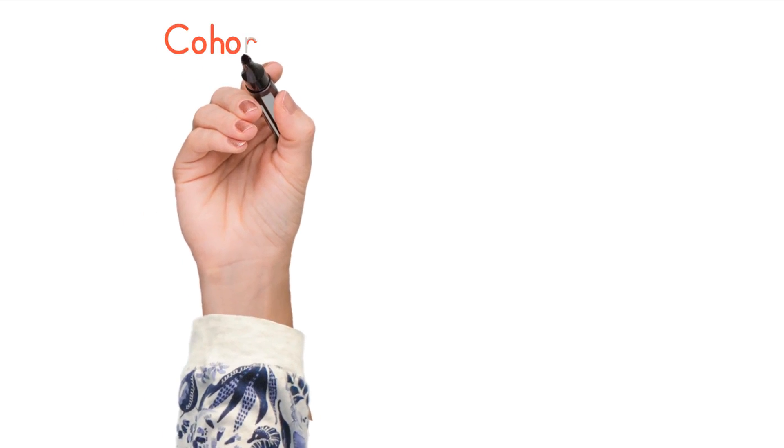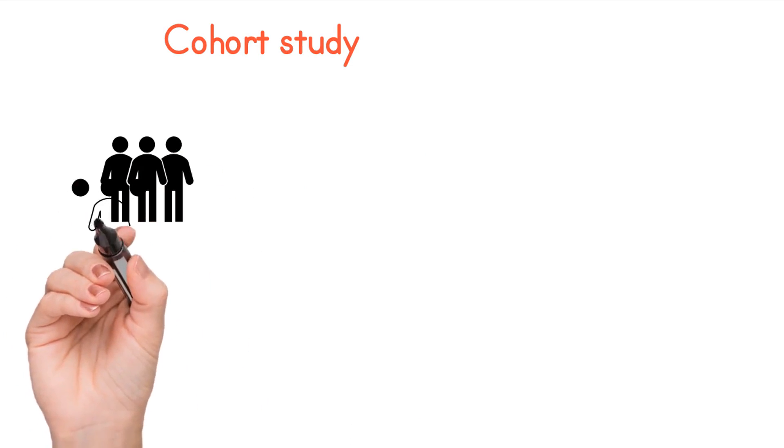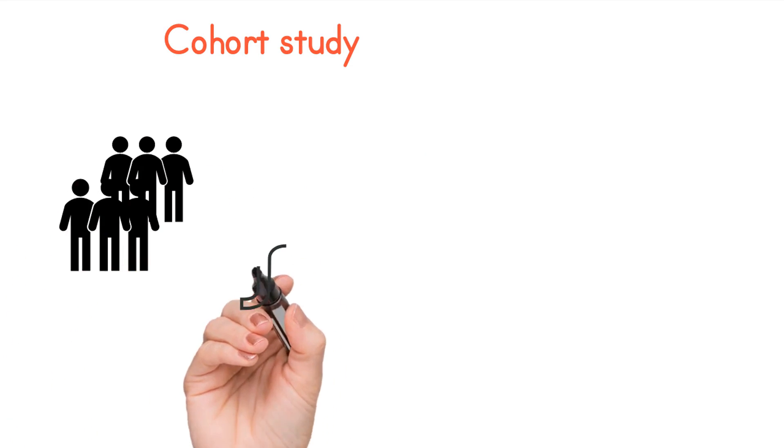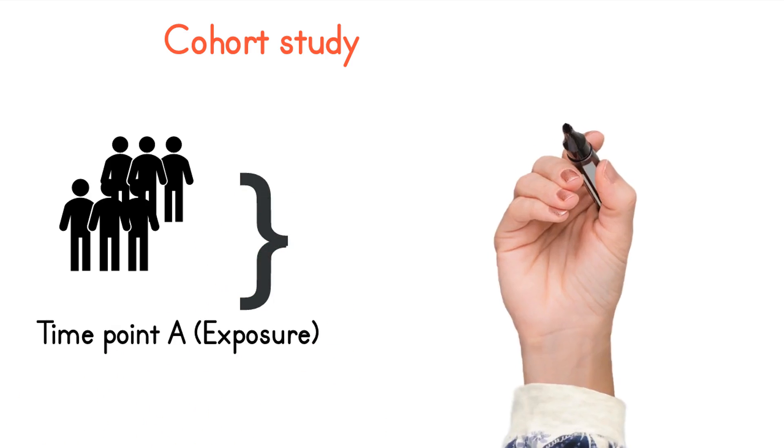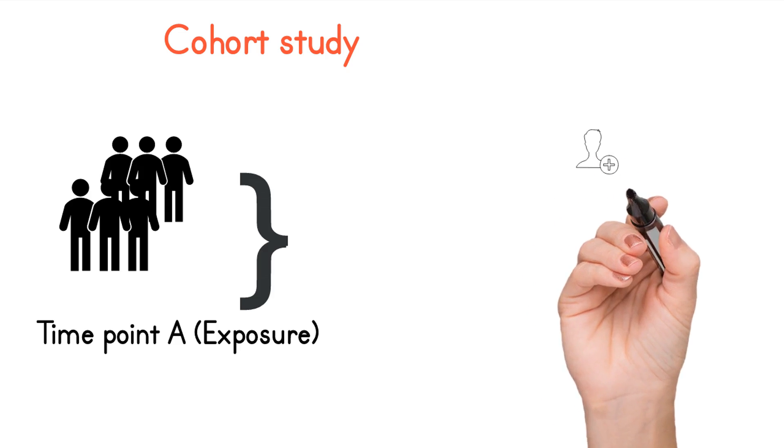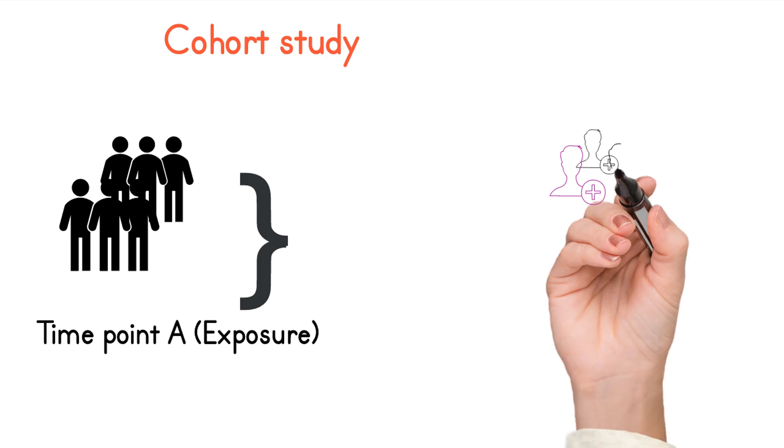Cohort studies ascertain exposure status first, then follow over time to determine outcome status. A group of people or patients with a specific exposure is followed up for a specific period to determine who has the outcome or disease and who doesn't have the disease.